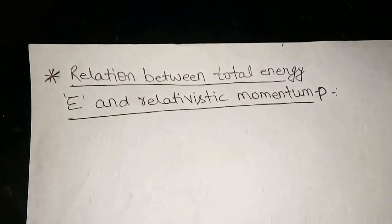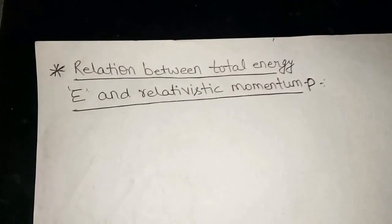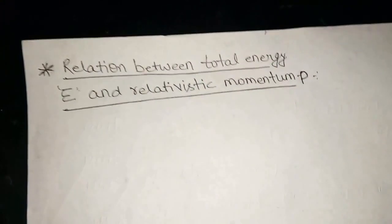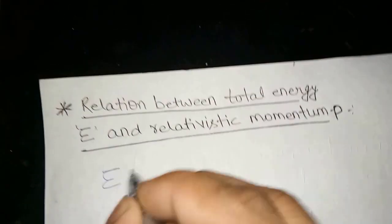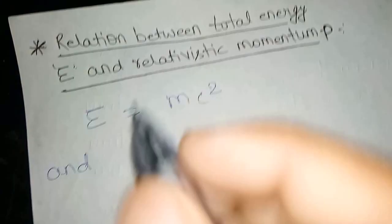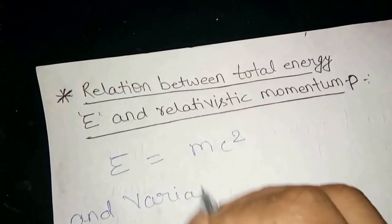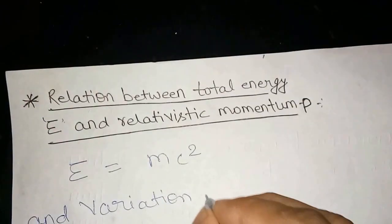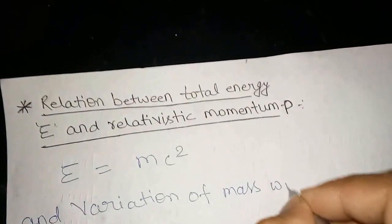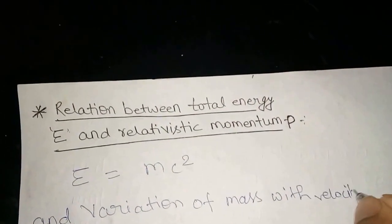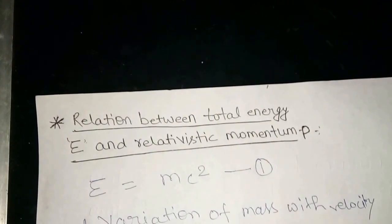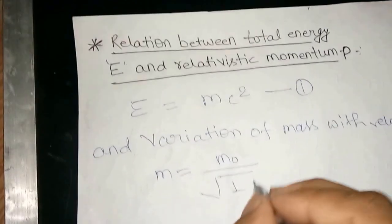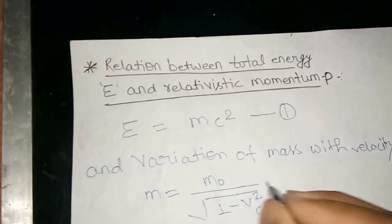Good morning friends. Today we define the relationship between total energy E and momentum P. We consider two equations: equation one, E equal to mc square, and equation two, the variation of mass with velocity, m equal to m-naught divided by under root 1 minus v square by c square.